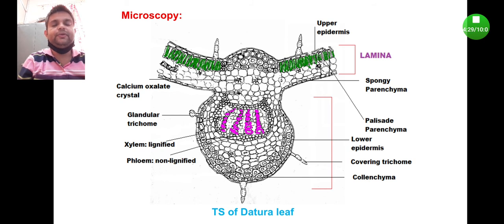So in brief, the microscopy consists of two parts: lamina part and the midrib part. Datura is an example of a dorsiventral leaf, meaning only at the topmost part you will find the presence of palisade parenchyma and spongy parenchyma below it.